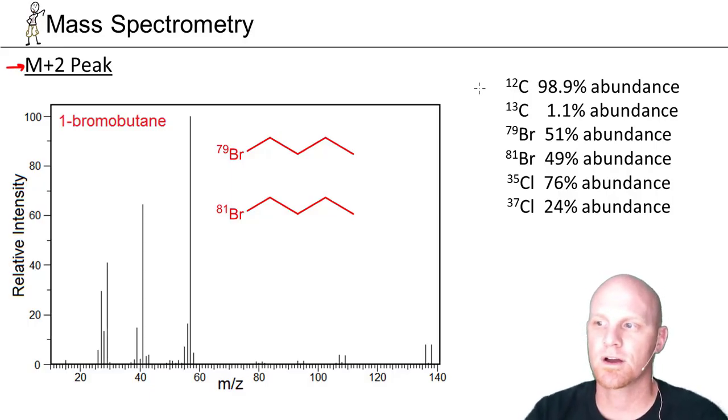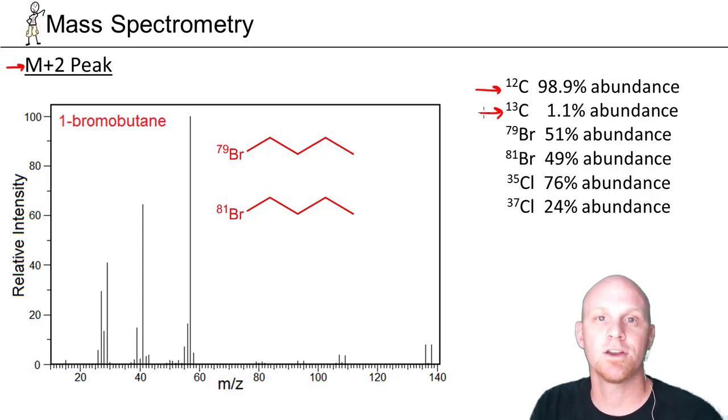If you recall, we just talked about the fact that carbon-12 has a 98.9% abundance, carbon-13 a 1.1% abundance. So the odds of getting any particular carbon in your molecule being a carbon-13 and getting an M+1 peak is 1.1%. The odds of getting two carbon-13s in your molecule is pretty much nil.